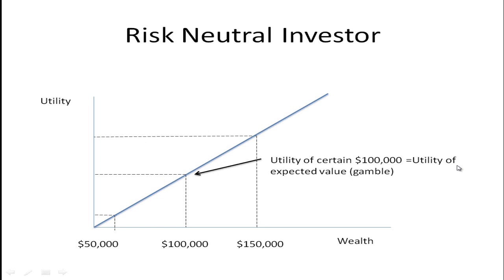Let's compare that to the risk-neutral investor. They have a straight-line utility function, so with no curvature or bowing, the utility of the certain $100,000 is the same as the utility of the expected value of the gamble. This is a person who doesn't really care about the risk involved — they only care about the expected value. Since both options have an expected value of $100,000, they're indifferent between the two.